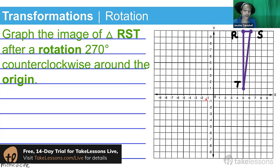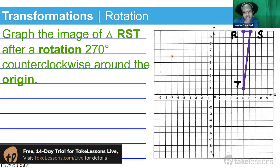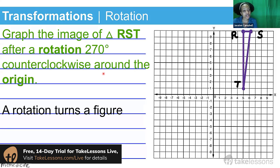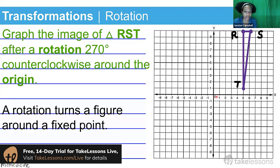Our stationary position — the point we're moving the figure with respect to — is going to be the origin, because you always need a point to move the figure about. Most of the time in geometry you're moving about the origin, though sometimes an exam will say move it about a point like negative seven, six. But we're not getting into that here since this is just a basic introduction. Our rotation turns a figure around a fixed point, which in this case is the point (0, 0), the origin.